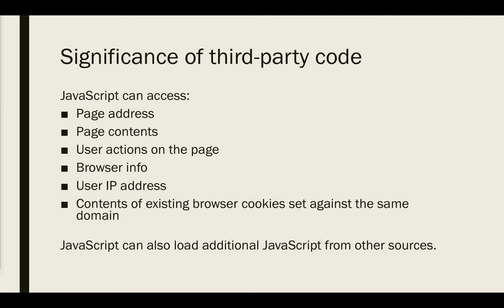What is the significance of third-party code? Why do I care about it? JavaScript that is loaded onto a web page can access the following things: the page address, the page contents, user actions on the page, browser info, the user IP address, and contents of existing browser cookies. JavaScript can also load additional JavaScript from other sources.